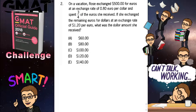Ladies and gentlemen, GMAT challenge number 2. On a vacation, Rose exchanged $500 for euros at an exchange rate of €0.80 per dollar and spent ¾ of the euros she received. If she exchanged the remaining euros for dollars at an exchange rate of $1.20 per euro, what was the dollar amount she received?